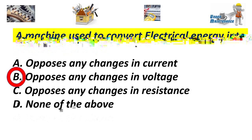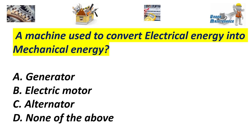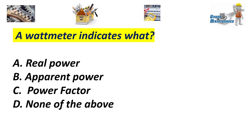A machine used to convert electrical energy into mechanical energy: A. Generator. B. Electric motor. C. Alternator. D. None of the above. Answer: B. Electric motor. A wattmeter measures: A. Real power. B. Apparent power. C. Factor. D. None of the above. Answer: A. Real power.